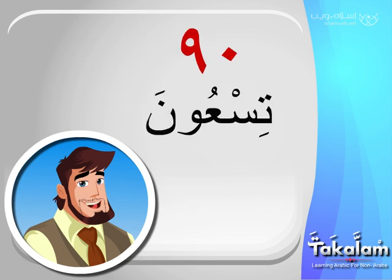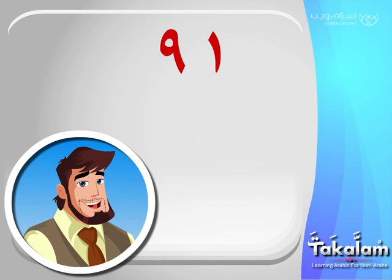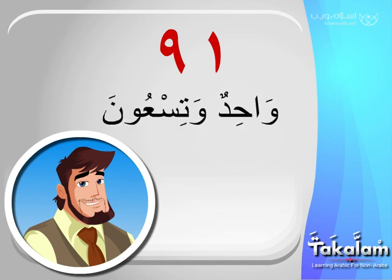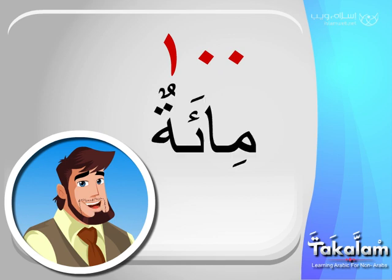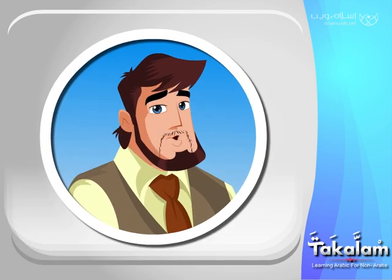90 is تسعون, and 91 would be واحد وتسعون. And finally, 100 is مئة. These were the cardinal numbers.